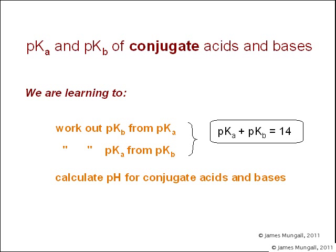Now we're going to relate Ka and Kb values for conjugate acids and bases. We are learning to work out pKb from pKa and then work out pKa from pKb using the relation pKa plus pKb equals 14.